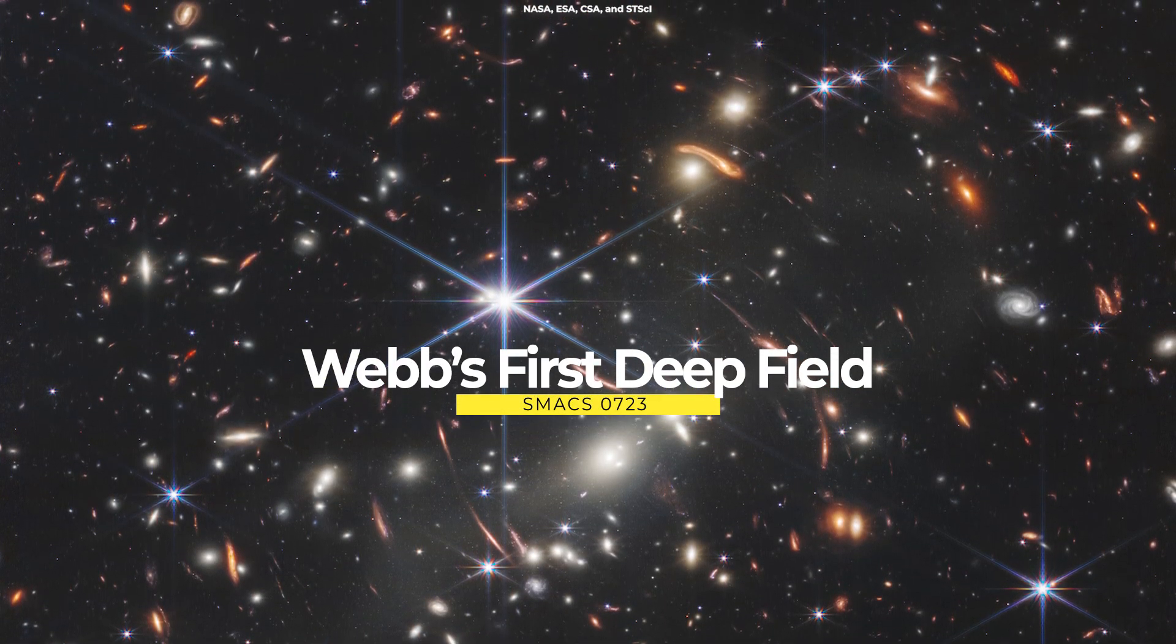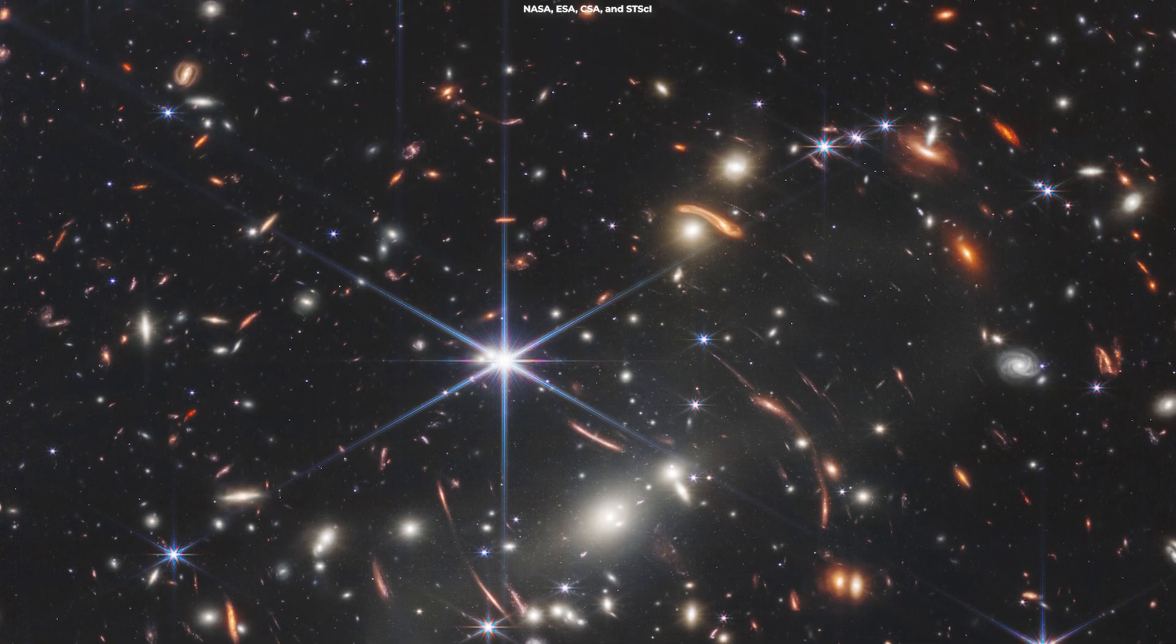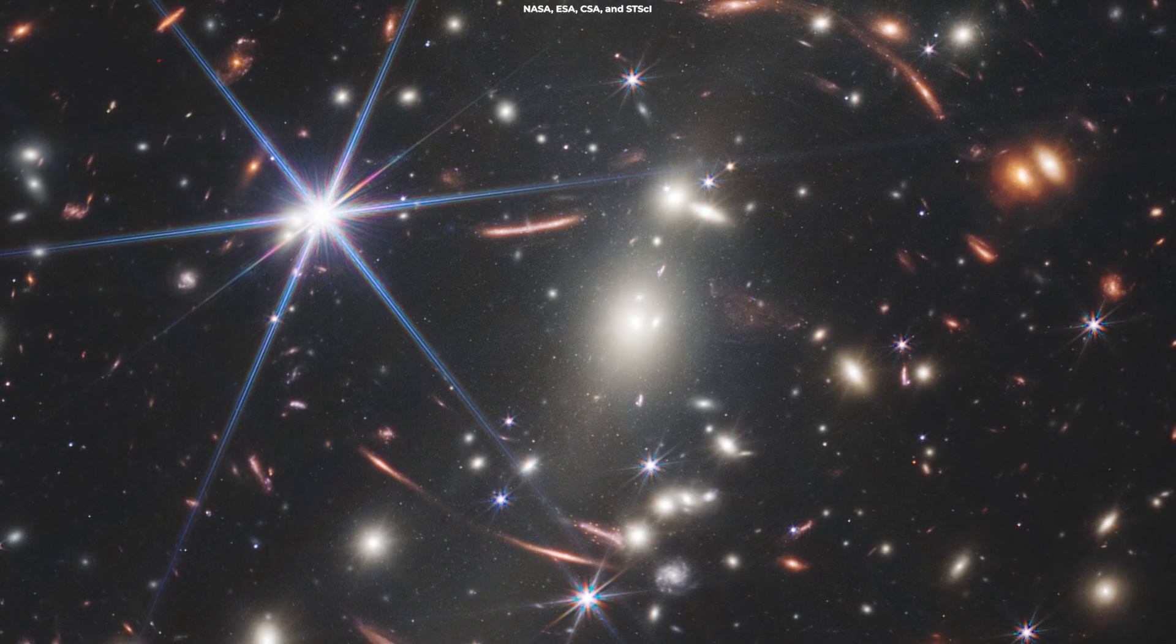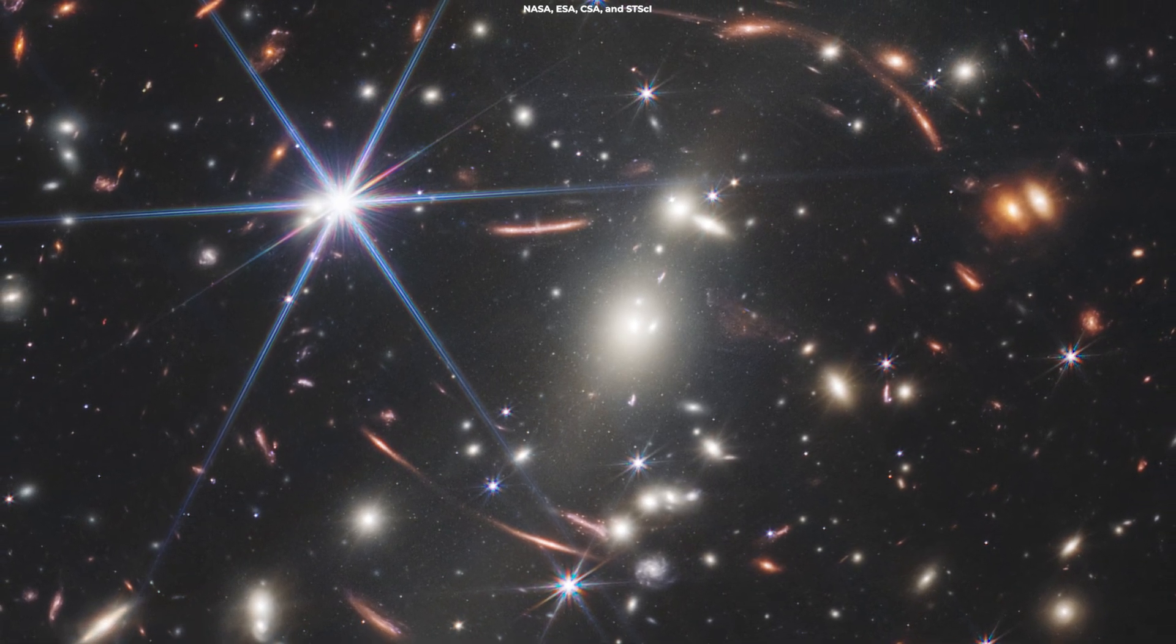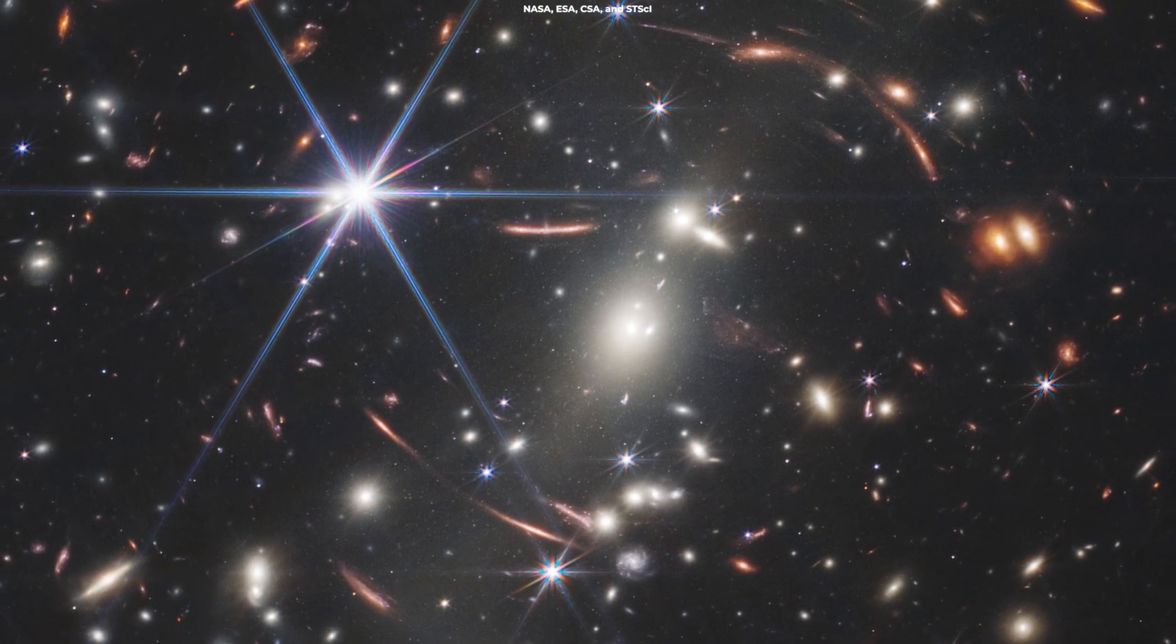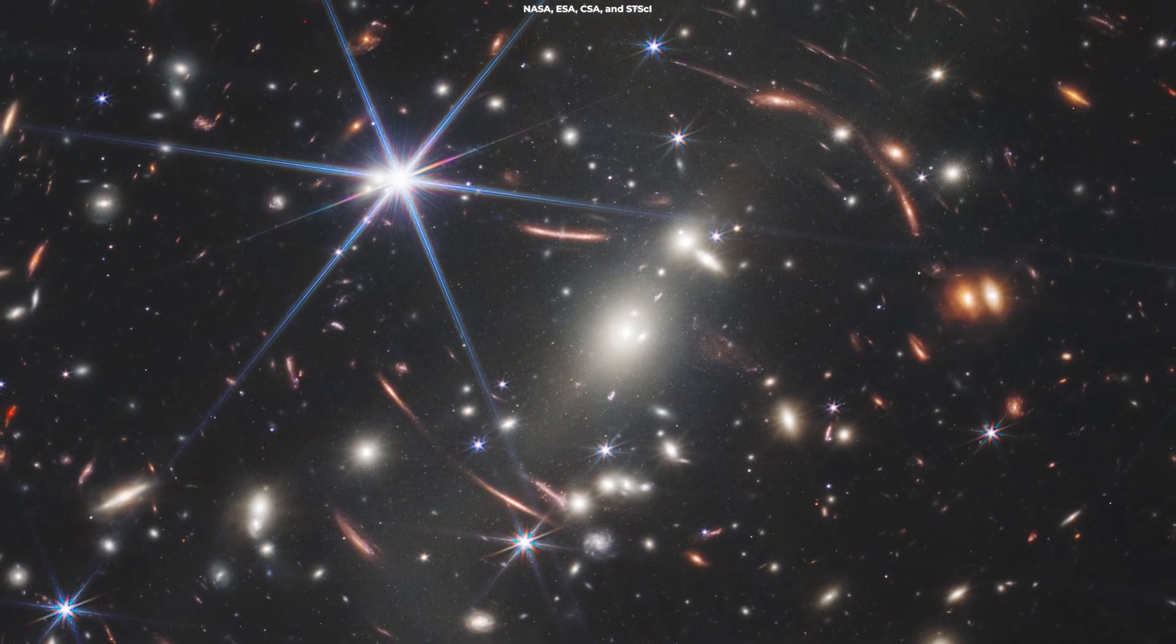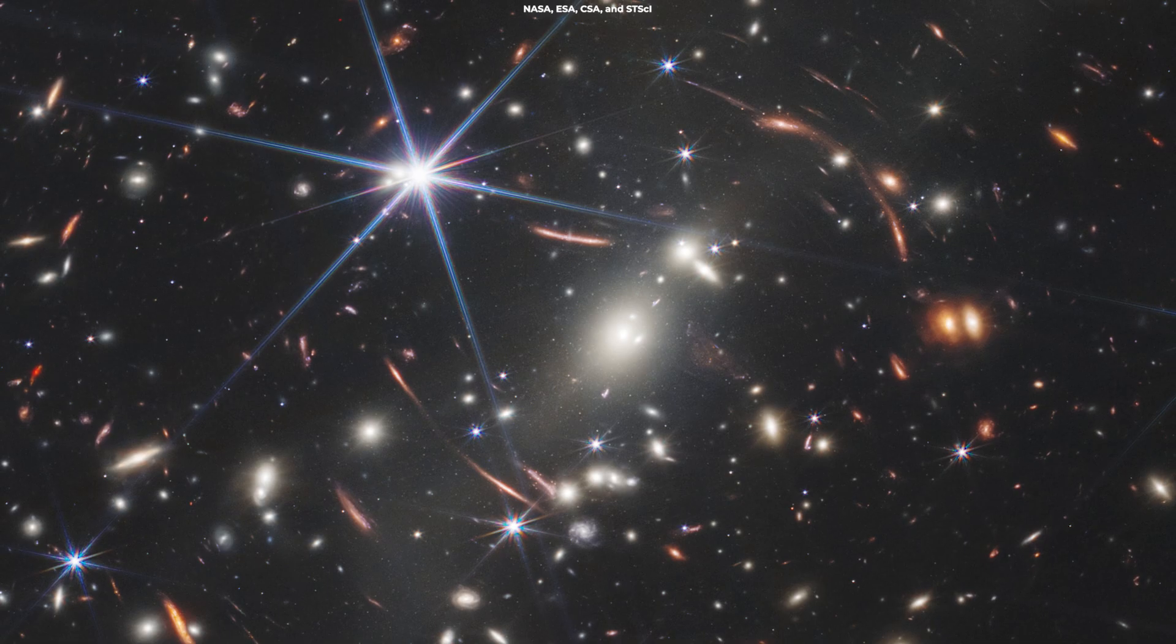The image known as Webb's first deep field covers a patch of sky about the size of a grain of sand. It shows the galaxy cluster SMACS-0723 as it appeared 4.6 billion years ago. Here you can see thousands of galaxies containing billions of stars.